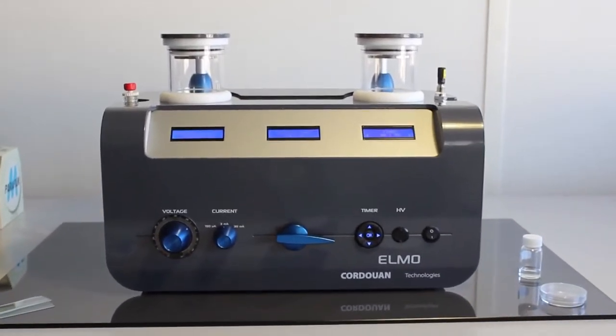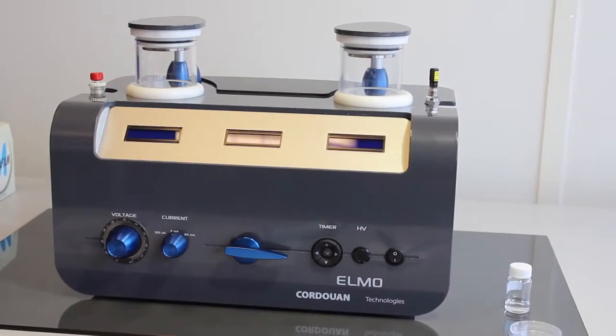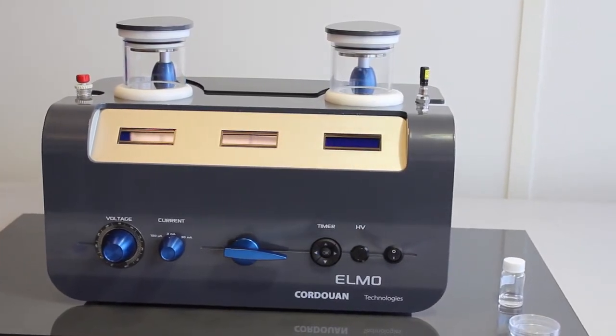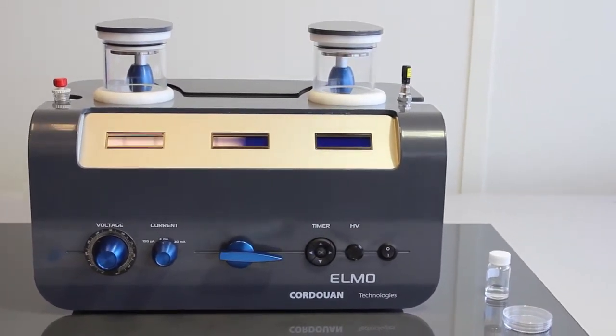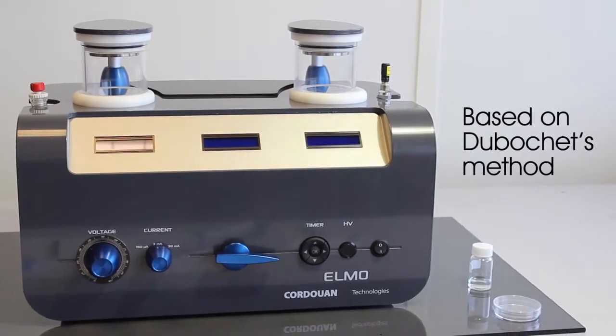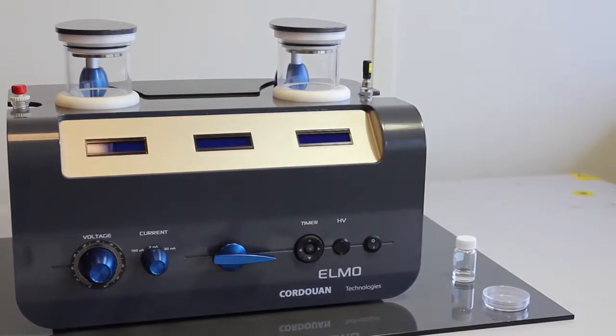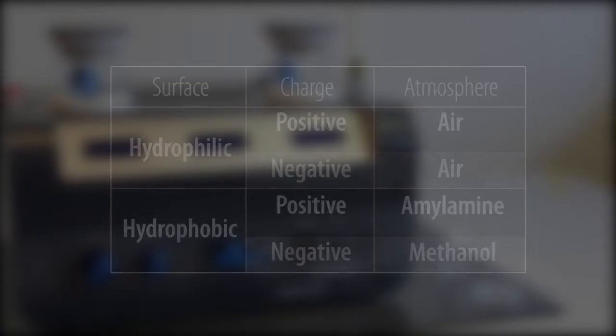Kortuin Technologies is pleased to introduce its Glow Discharge System for TEM Support Films or Grids, ELMO. Based on Dubaschitz method, the ELMO system has been developed in collaboration with the IGBMC and ICS laboratories.